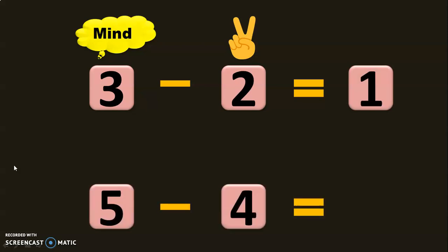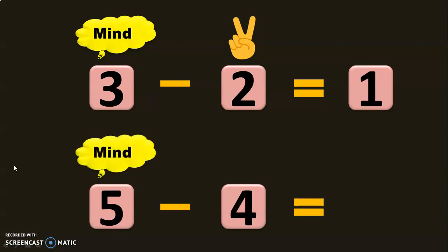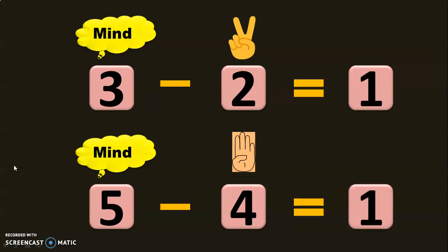Let us do the next sum: 5 minus 4. 5 in the mind and 4 in the fingers. Before 5: 4, 3, 2, 1. The answer, or the difference, is 1.